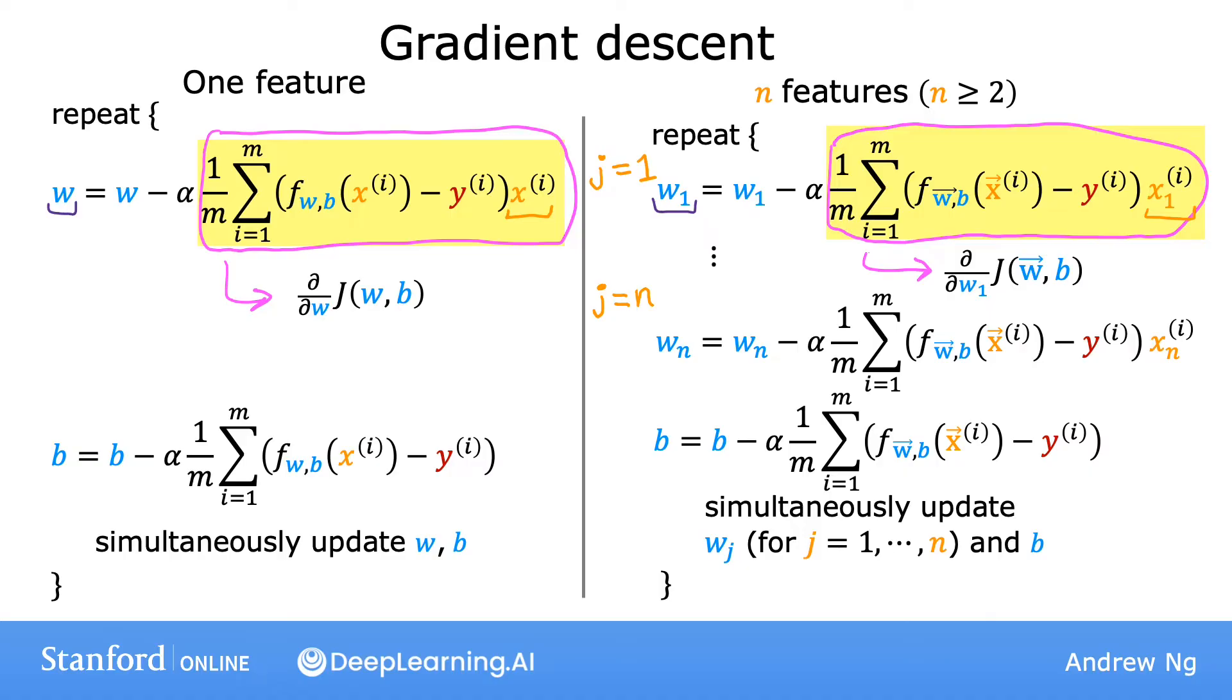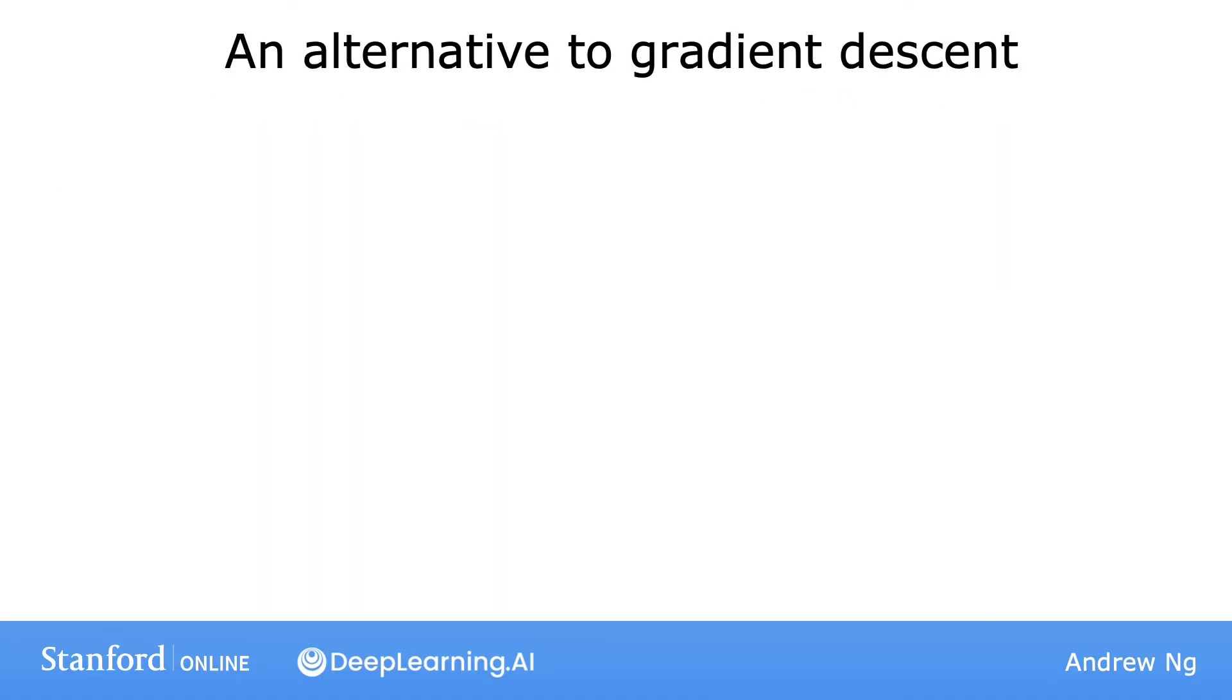So that's it for gradient descent for multiple regression. Before moving on from this video, I want to make a quick aside or a quick side note on an alternative way for finding w and b for linear regression. And this method is called the normal equation.